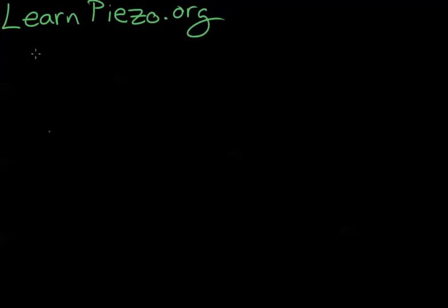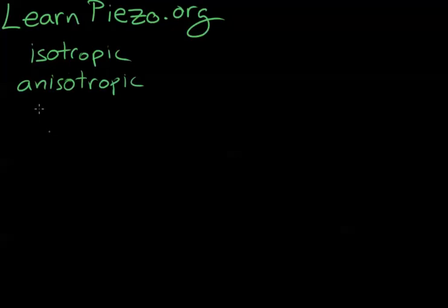In this lesson we're going to be learning about isotropic and anisotropic behavior of material properties. Basically the word isotropic means the material property is the same in all directions.